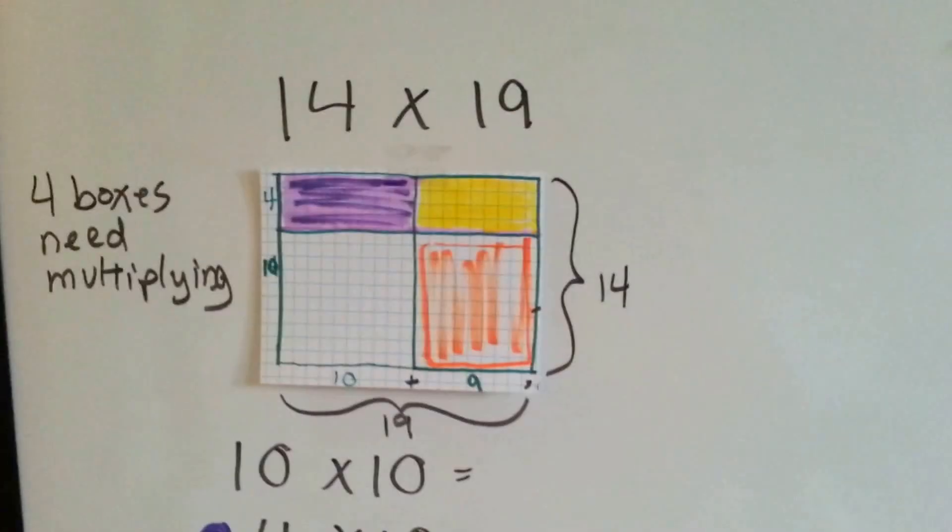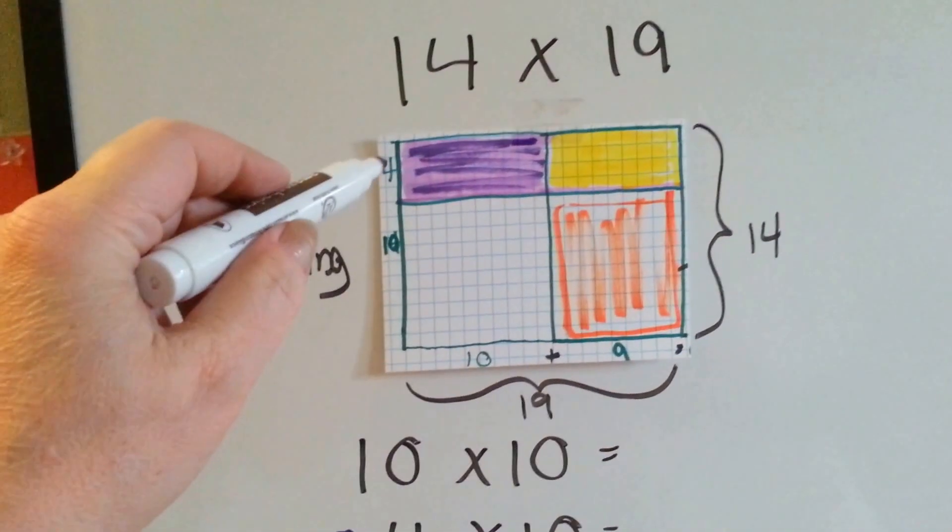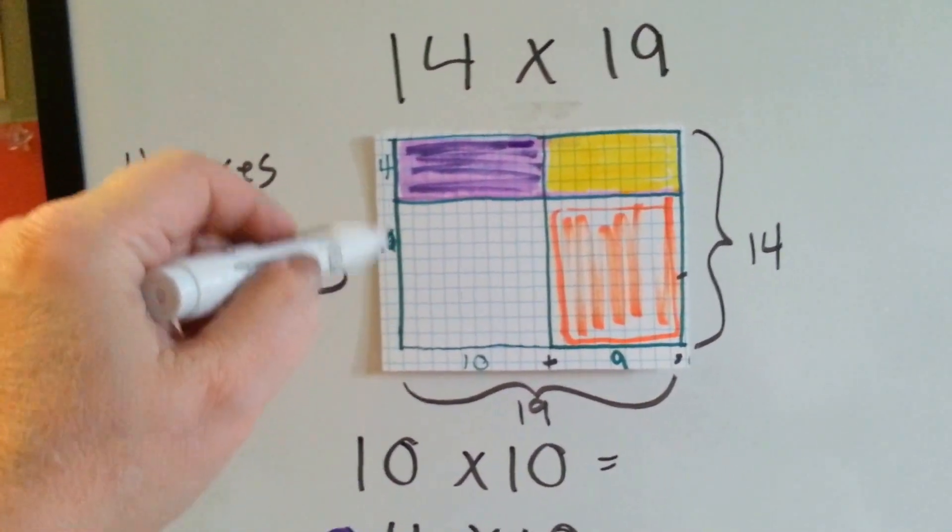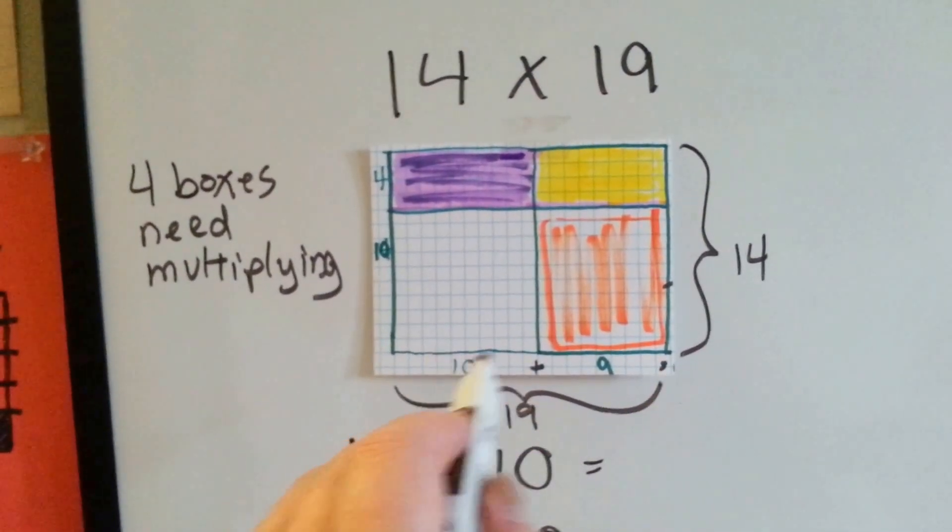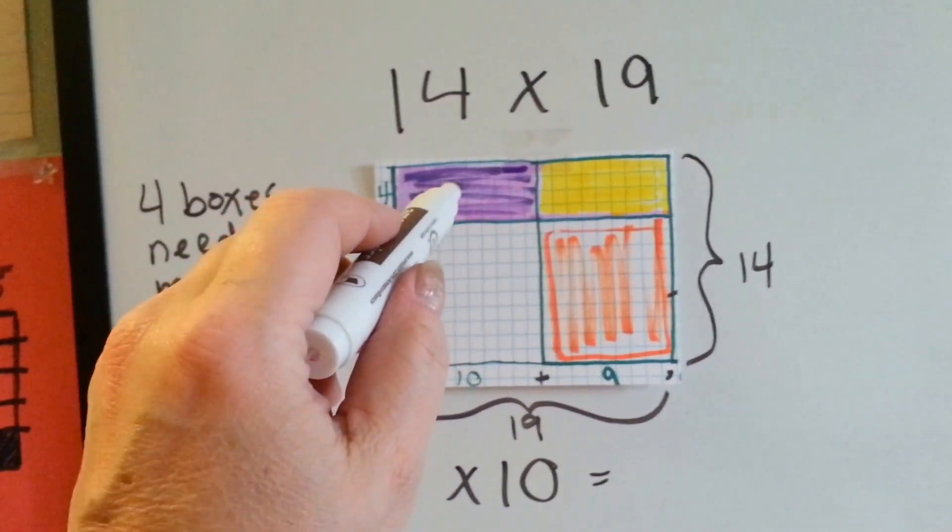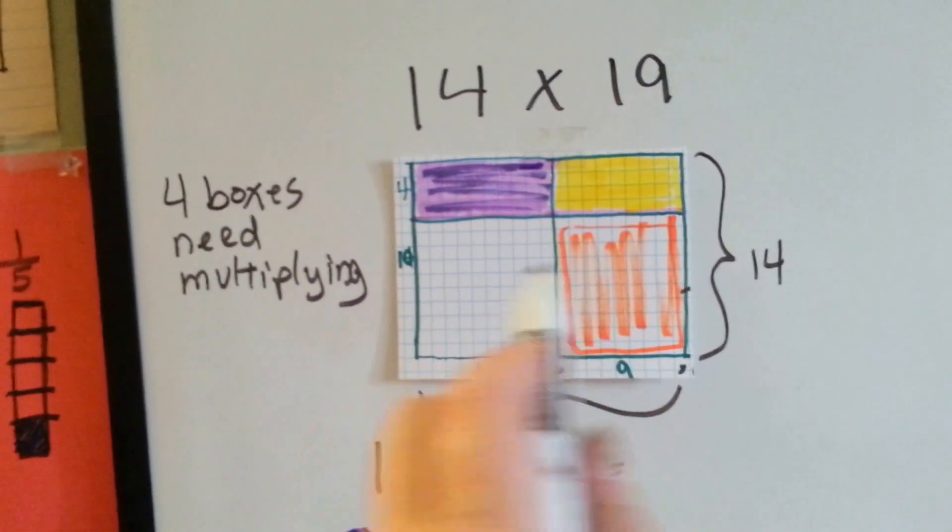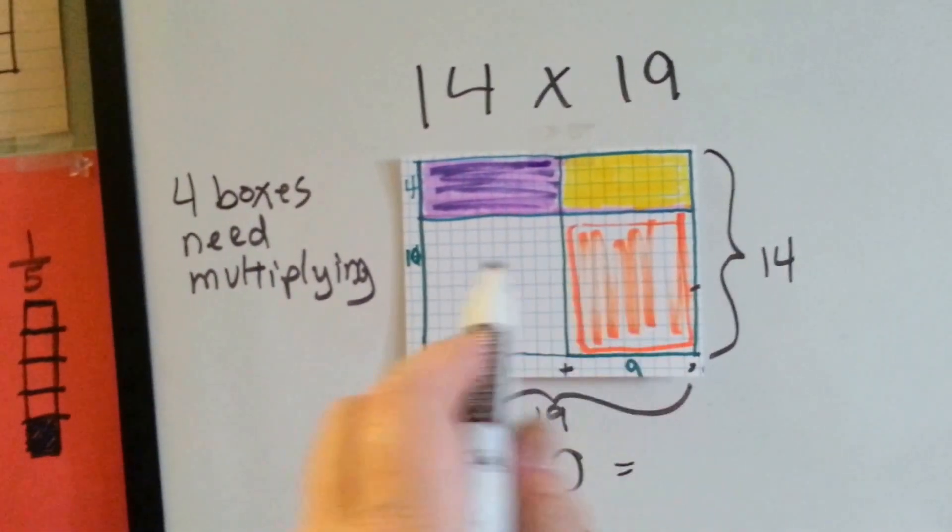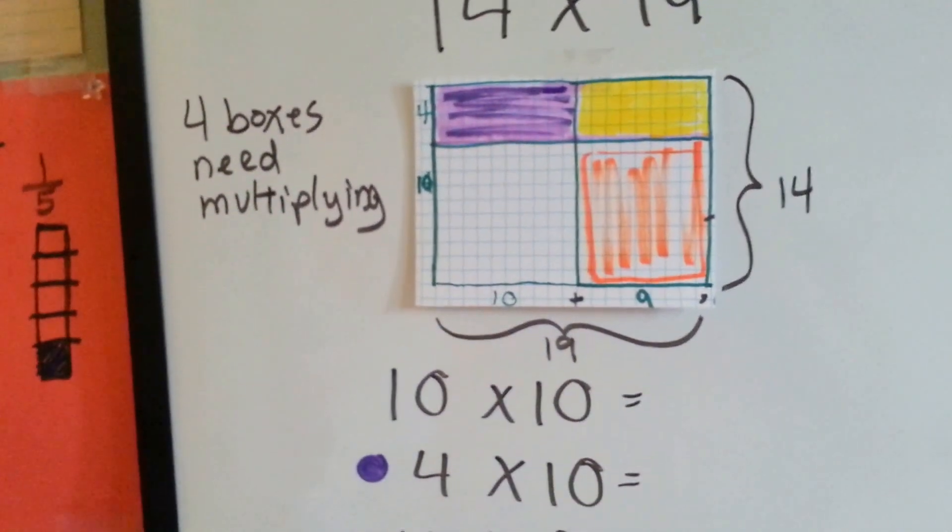Let's try another one. We've got 14 times 19. So, we've got 14 boxes going down here, 10 and 4. And we've got 19 boxes going this way, 10 and 9. We split the 14 into a 10 and a 4. And we split the 19 into 10 and 9.